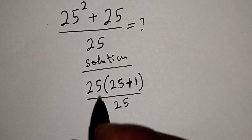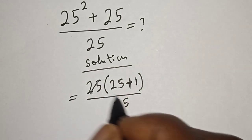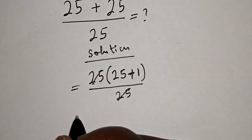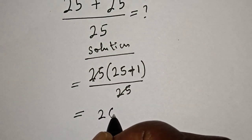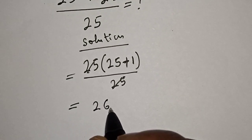Then this 25 will cancel this 25. This is equal to 25 plus 1, that is 26, and that is our final answer.